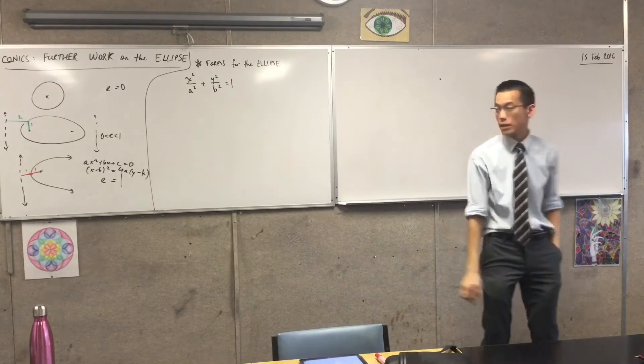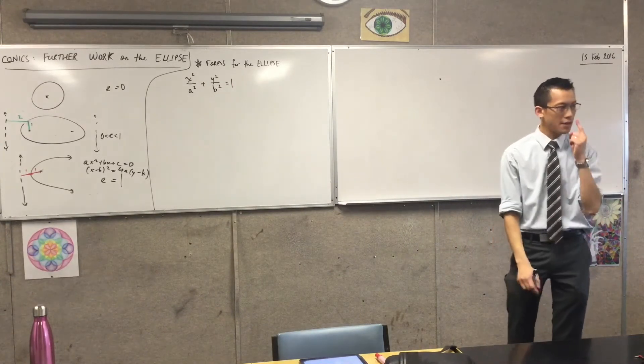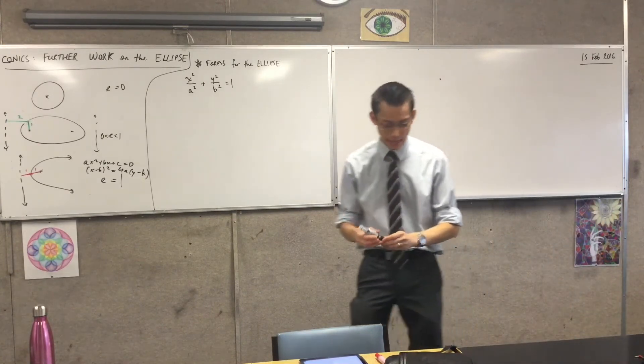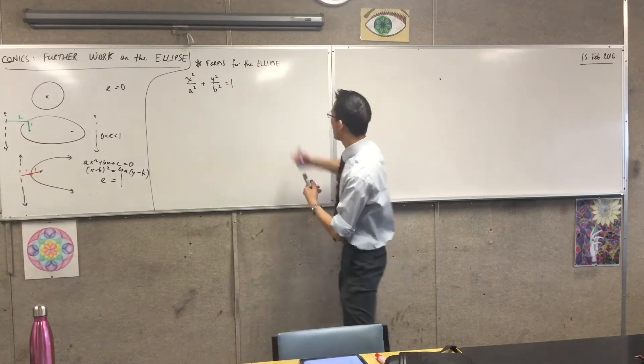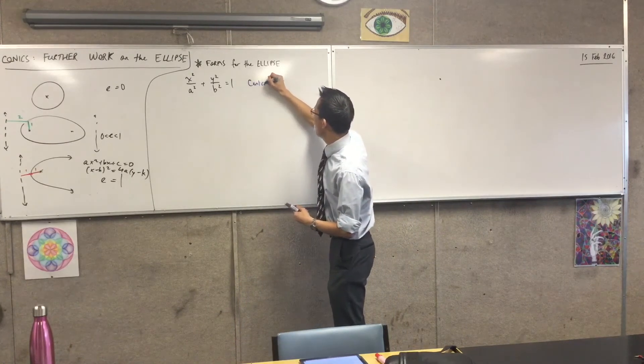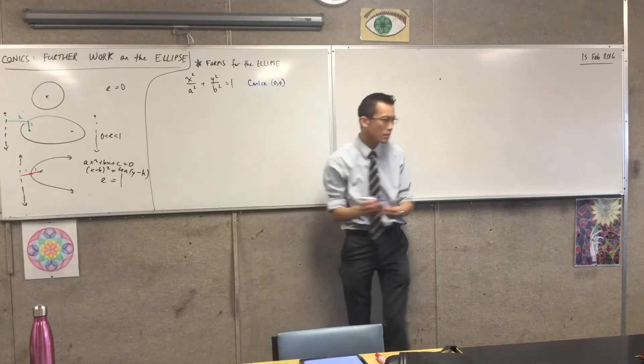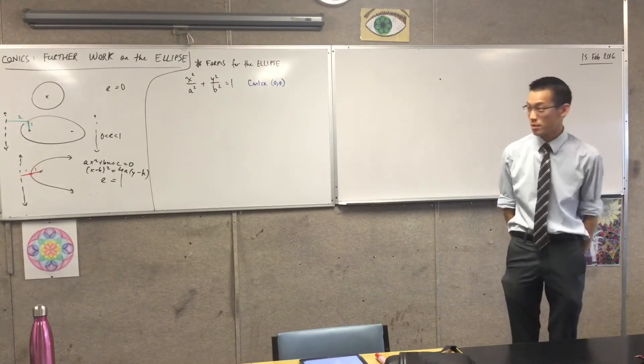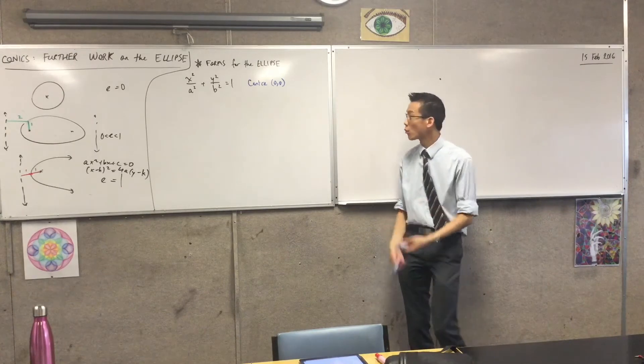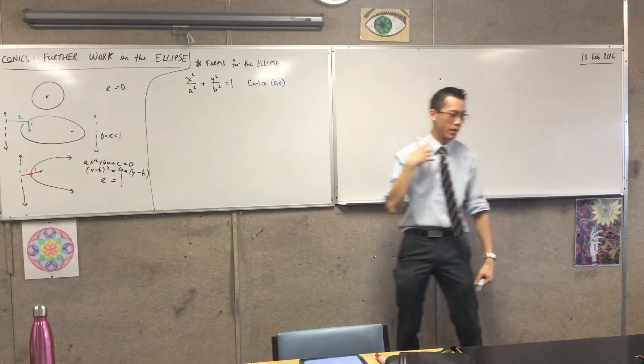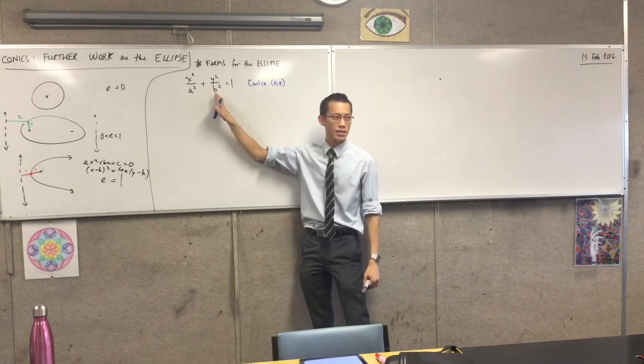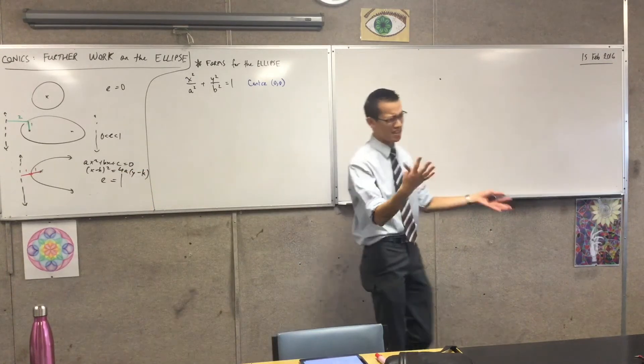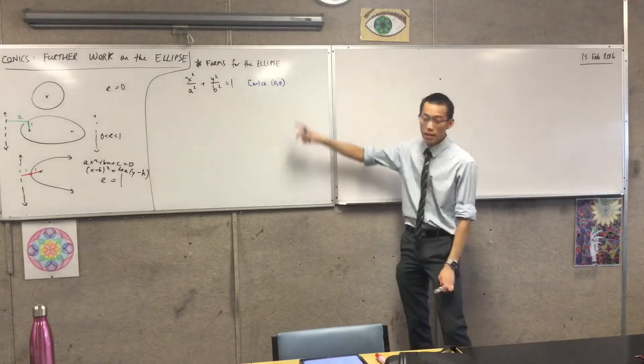All the ellipses we've been looking at have been in this form so far. Now, two important things to note about this. Number one, where is the center of this ellipse? It's at the origin, right? Now the reason we've been doing that, center zero, zero. The reason we've been doing that is because it just makes the algebra simpler. It makes the numbers simpler. Good morning.